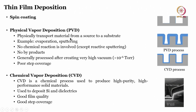PVD involves physical transport of material from a source to a substrate — examples are evaporation or sputtering — with no chemical reaction, no by-products, and processing at very high vacuum (~10⁻⁶ Torr), but with poor step coverage. CVD is a chemical process used to produce high-purity, high-performance solid materials. It is used to deposit silicon and dielectrics, achieves good film quality, and also provides good step coverage.